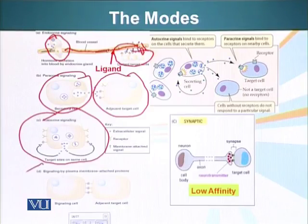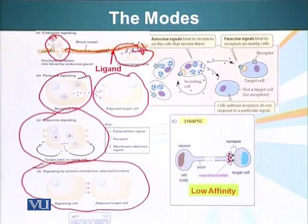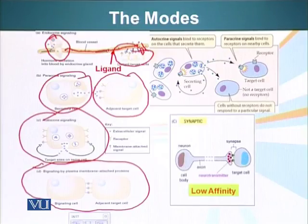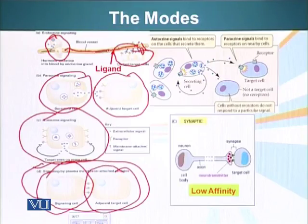Signaling molecules don't have to be mobile all the time. They can also be attached or embedded in the plasma membrane of a cell. When two cells interact, one has a signaling molecule present on its plasma membrane and the other has a receptor on its cell surface. When this interaction takes place, the signaling information is transmitted to the target cell.